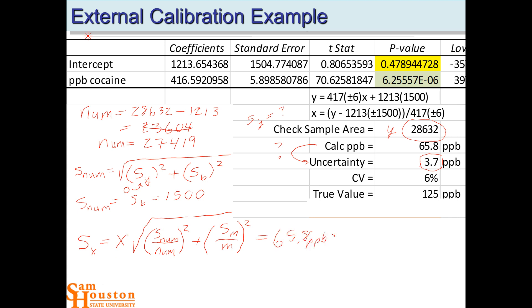So at 65.8 parts per billion, square root of the numerator, let's see, it was 1,500 over 27,419. Do you see where those numbers came from? Look in the ANOVA table. And so then you hammer that through your calculator.